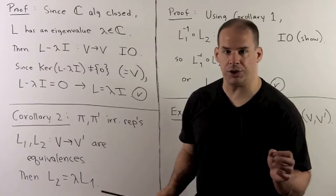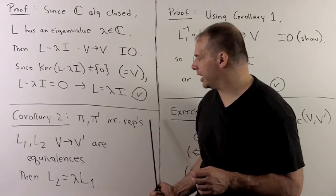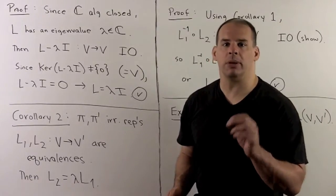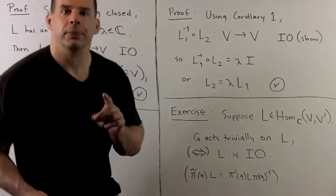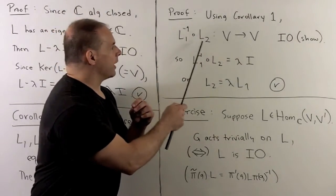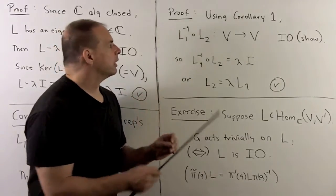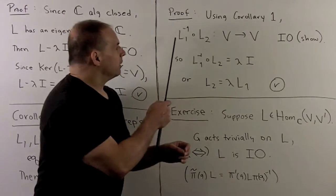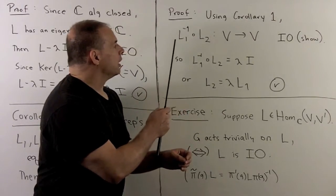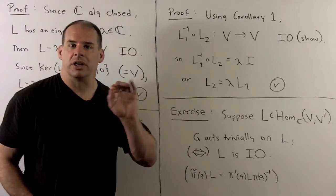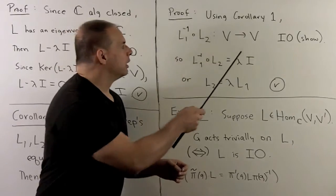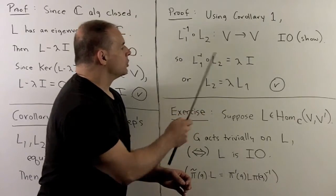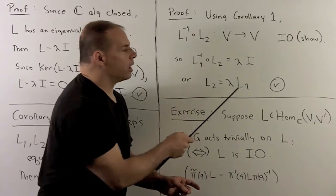In turn, we use this to show corollary two. If we have pi and pi prime irreducible representations, and L1 and L2 are equivalences carrying V to V prime, then we must have that L2 is a multiple of L1. To show this, I'll form L1 inverse composed with L2, which carries V back to itself. Since L1 and L2 are equivalences and therefore vector space isomorphisms, the composition is also a vector space isomorphism. It's left as an exercise to show this is also an intertwining operator. By corollary one, L1 inverse composed with L2 is a multiple of the identity. Applying L1 to both sides, we have that L2 equals lambda times L1, and that's our result.